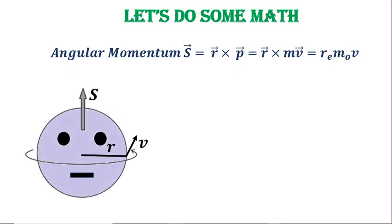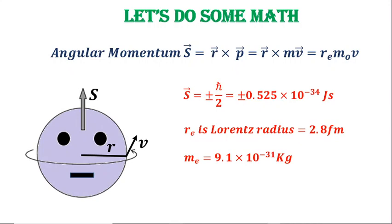From experiments, we know that spin of electron is given by h bar by 2, which is 0.525 times 10 raised to the power minus 34 joule seconds. r_e is Lorentz radius, which is the interaction radius of an electron given by 2.8 femtometers. And m_e is the mass of the electron.